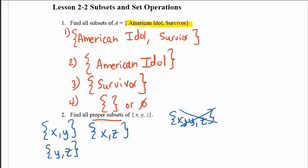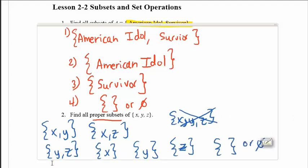I could do just one element, so I could do just X, just Y, just Z. And then finally, I can do an empty set.